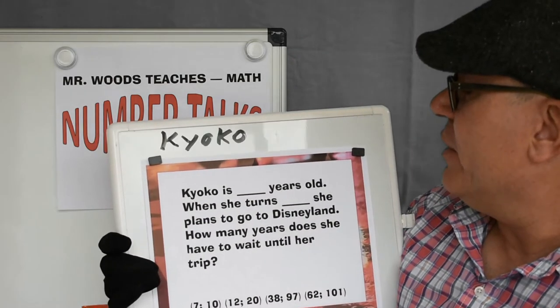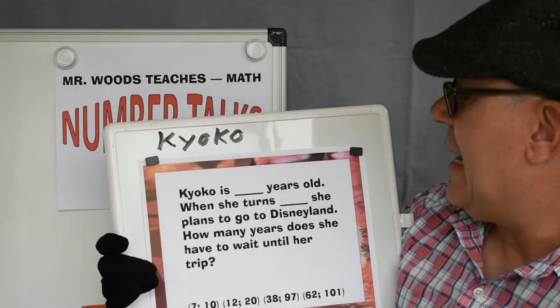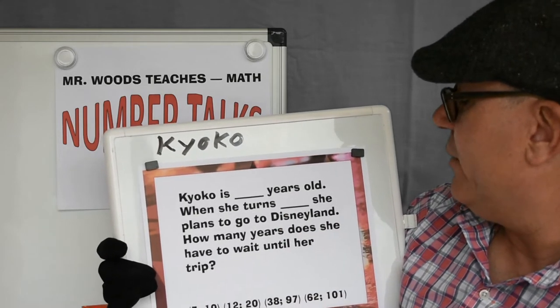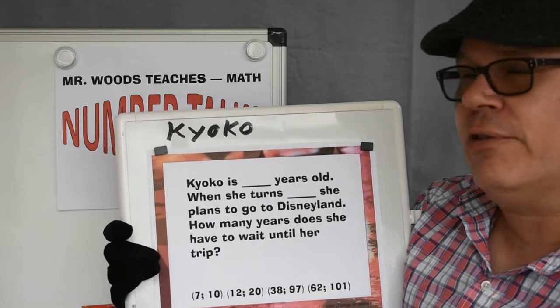Kyoko is seven years old. When she turns ten, she plans to go to Disneyland. How many years does she have to wait until her trip?